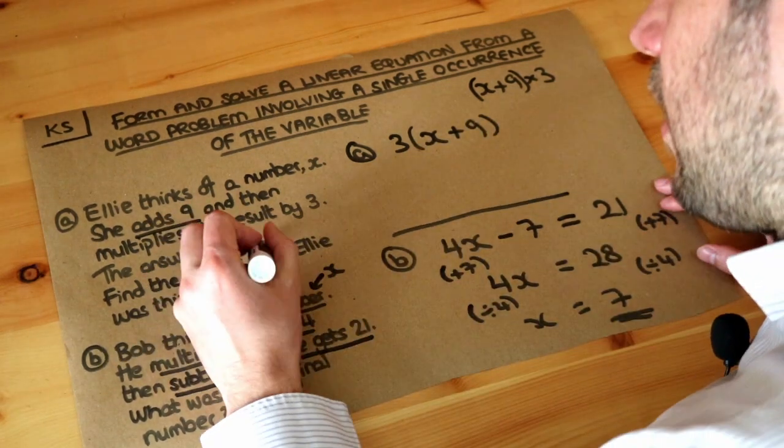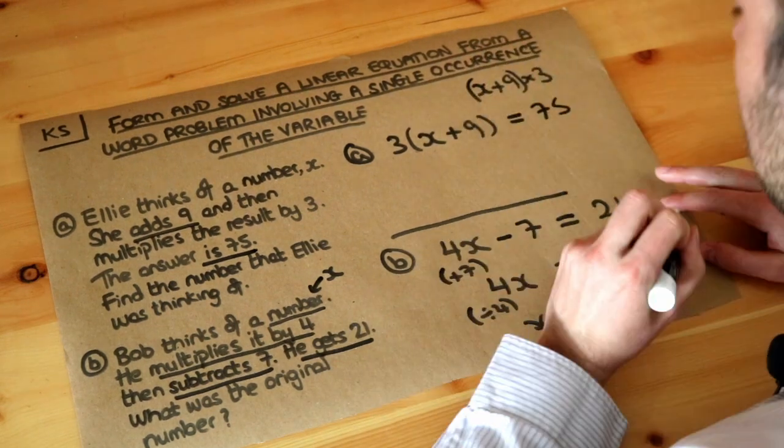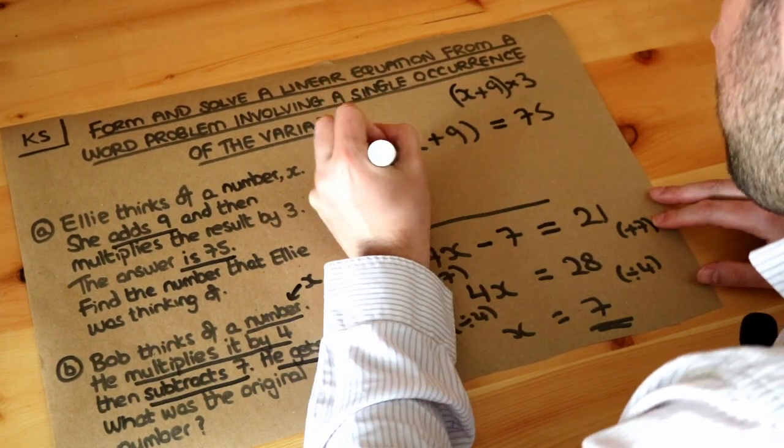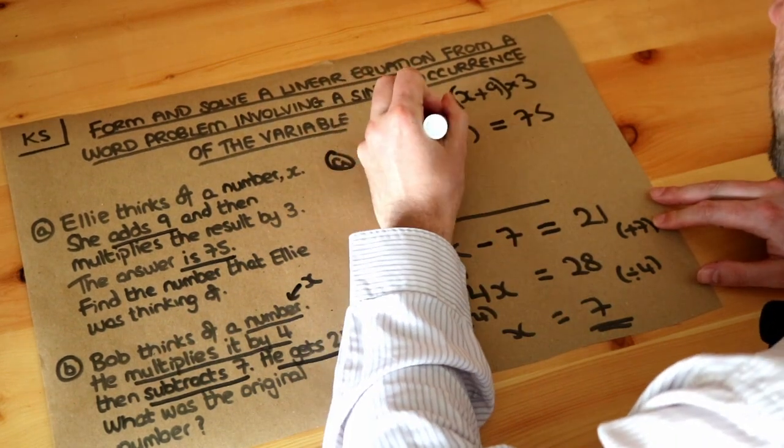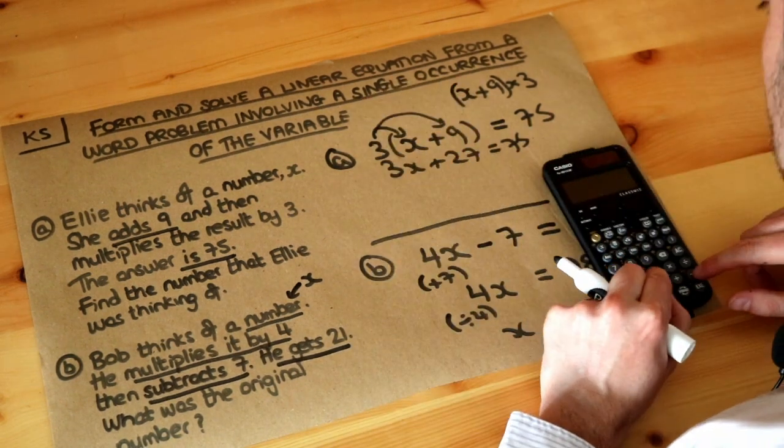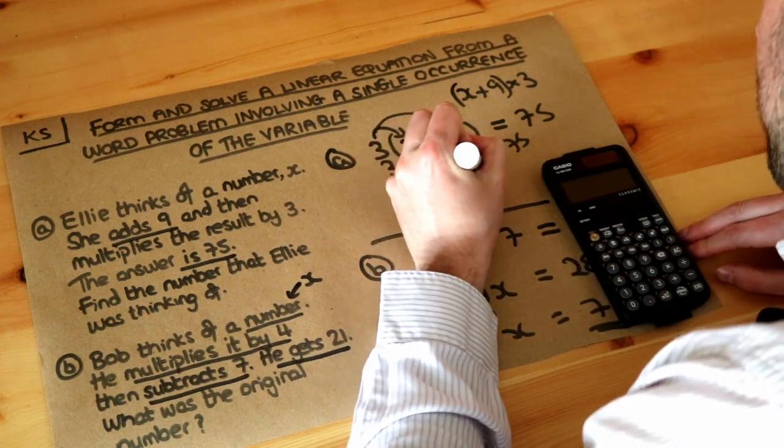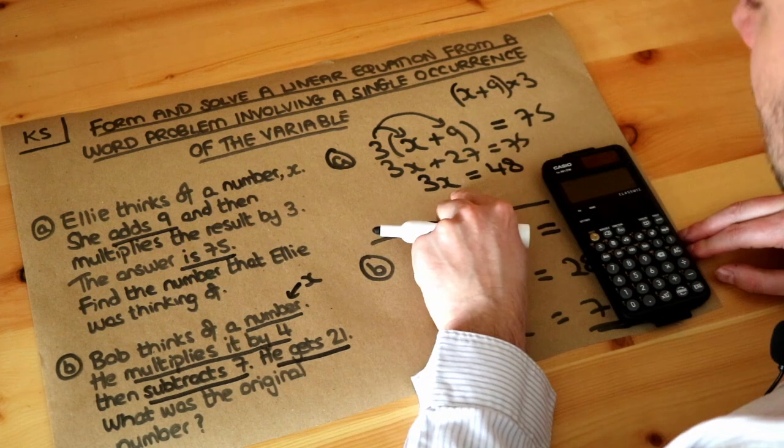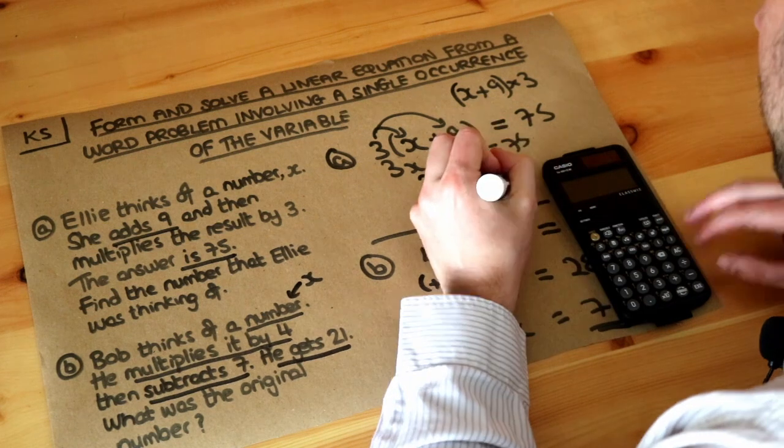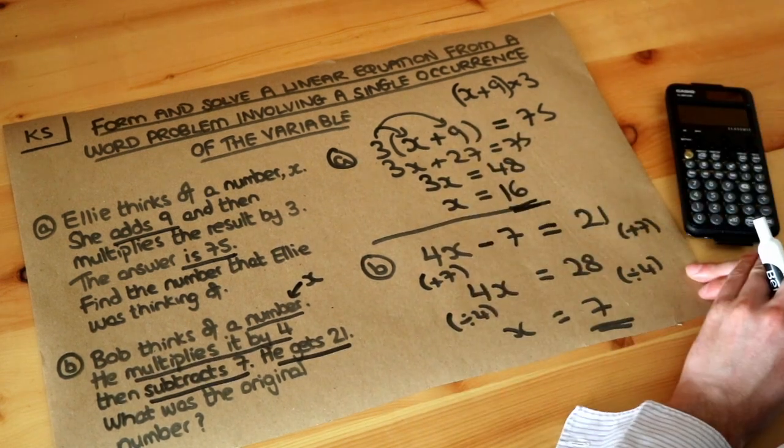The answer is 75, so 3(x + 9) = 75. Now we solve this equation. We expand the brackets: 3 times x and 3 times 9, which is 27, giving us 3x + 27 = 75. Then 75 minus 27 gives 3x = 48. To get rid of the times by 3, we divide both sides by 3, so x = 48 ÷ 3 = 16. That is the original number Ellie was thinking of.